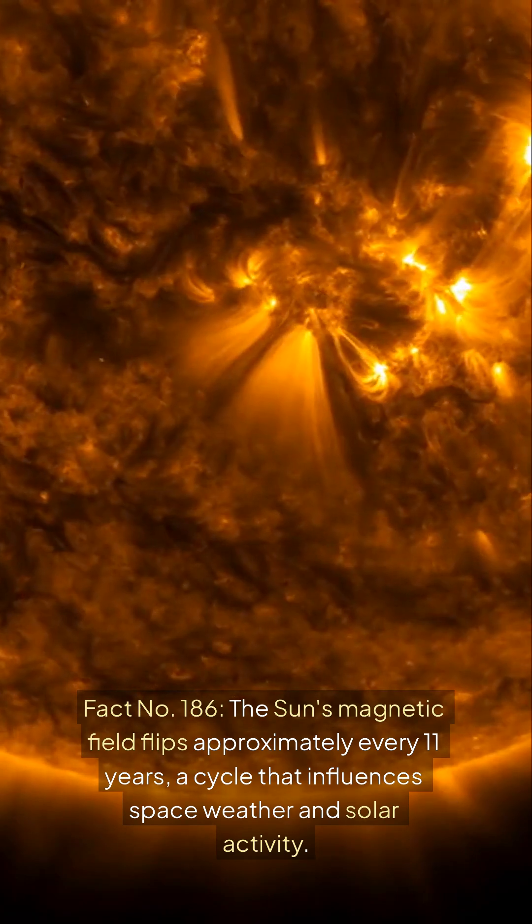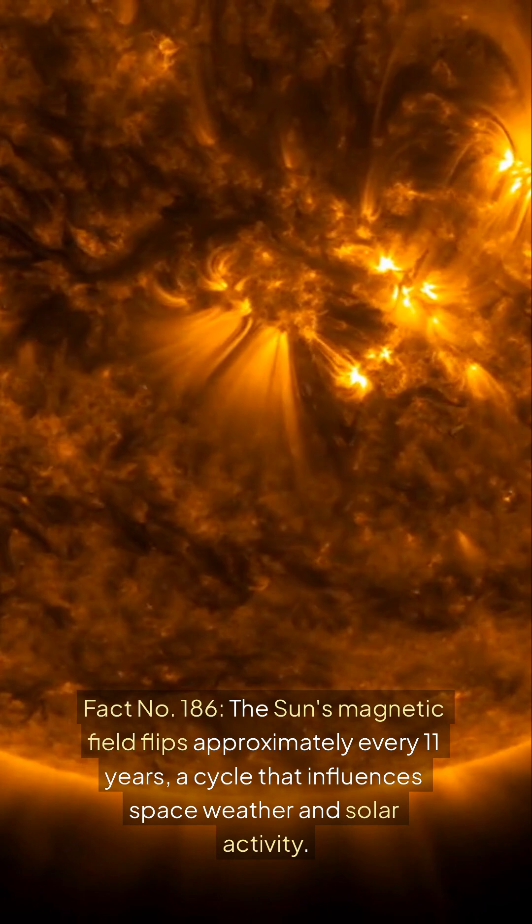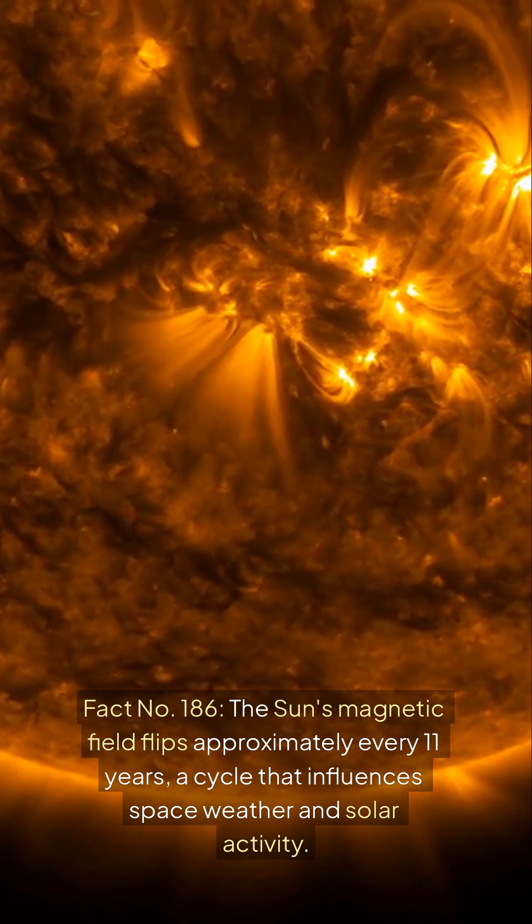Fact number 186, the sun's magnetic field flips approximately every 11 years, a cycle that influences space weather and solar activity.